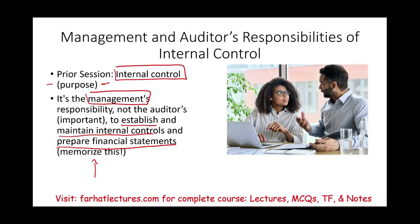Management is responsible for establishing internal control. To run the company you need to have some sort of internal control system — you need policies and procedures. The auditor is an outsider; they should not establish those policies and procedures. It's in management's best interest to have internal control, and management is also responsible for financial statements. The auditor will evaluate management's internal control but will not establish, maintain it, or prepare financial statements — that's management's responsibility.